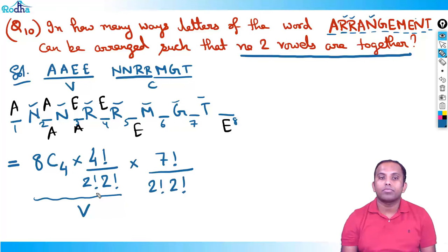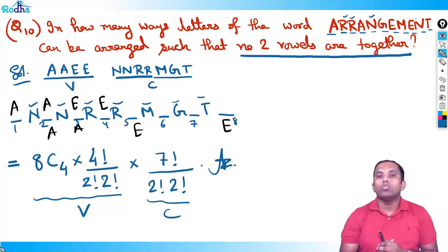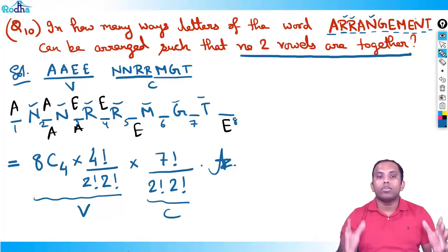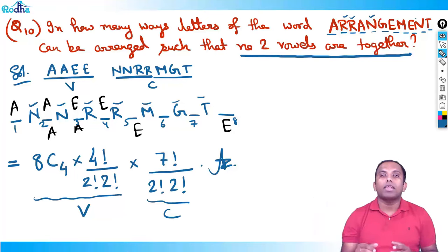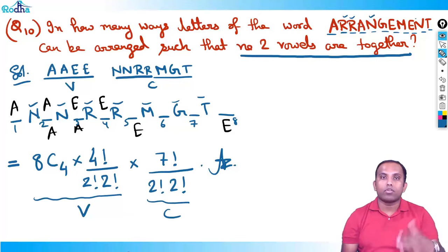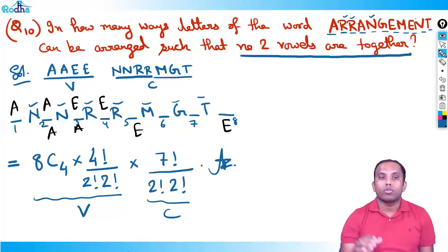The seven consonants are also not distinct — N repeats twice and R repeats twice — so divide by 2! × 2!. The full answer is 8C4 × (4! / 2! × 2!) × (7! / 2! × 2!). The key concept: for no two vowels together, place all consonants, form n+1 places, then place vowels in those positions.